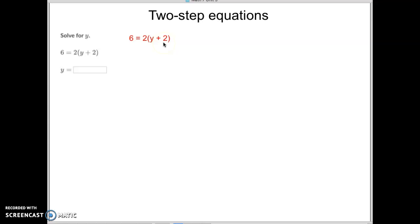So I'm going to start off with my original problem, and I'm first going to multiply 2 by both the y and the 2. When I do that, I get 6 equals 2y plus 4. Hopefully you see where I multiplied both of those by 2.